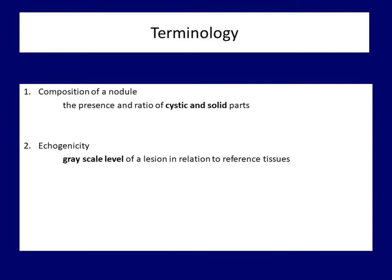First, some terminology. There are two basic features of a nodule: composition and echogenicity. The composition of a lesion refers to the lack or presence of cystic and solid portions. The echogenicity refers to the grayscale level of the solid part of an anatomical structure. These two properties are the basis for the decision on further management of the patient.